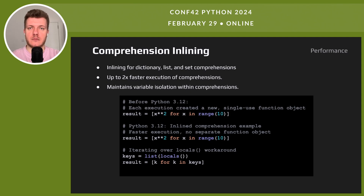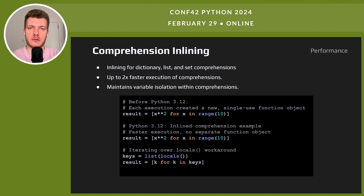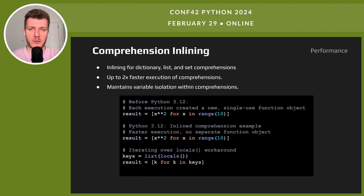PEP 709 marks a pivotal shift in Python comprehensions — it introduces inlining for lists, dictionaries, and sets. This eliminates the need for creating temporary function objects, and comprehensions are now up to twice as fast. They also keep variables isolated, enhancing code safety. Tracebacks and profiling see some changes due to this. The symtable module adapts, along with local behavior in comprehensions. There is a notable quirk involving iterating over locals during tracing, and there is a straightforward workaround for that.